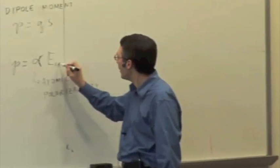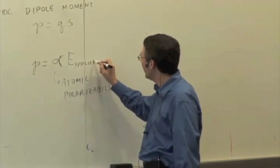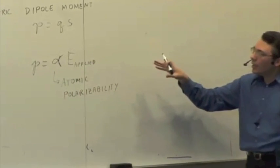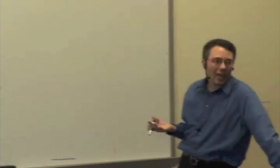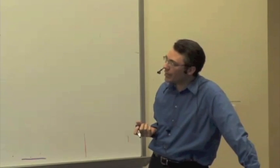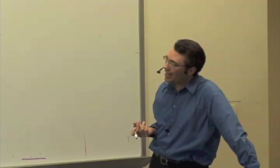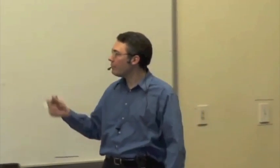So you can think of this as the applied electric field due to some other external charge acting at the presence of some atom, and it creates a dipole moment. It causes it to polarize. And it's a property of the material. It's a property of matter.